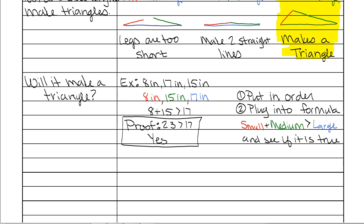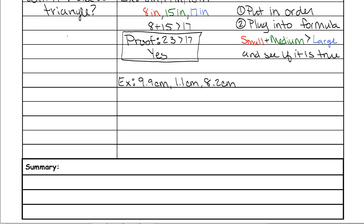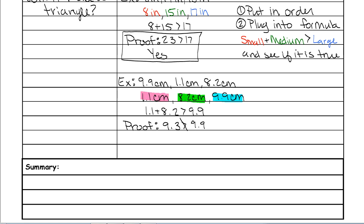We're going to try one more example. Put the values in order from least to greatest, plug them into the formula, then solve. What's 1.1 plus 8.2? That would be 9.3. Unfortunately, 9.3 is not greater than 9.9, so that is not true. This would be my proof, and of course, this does not make a triangle.